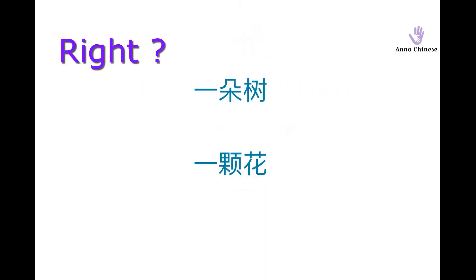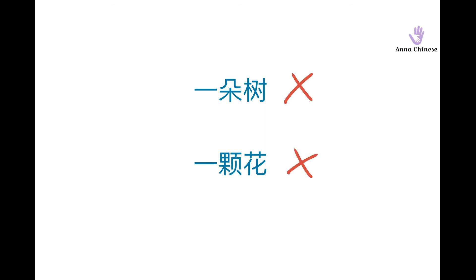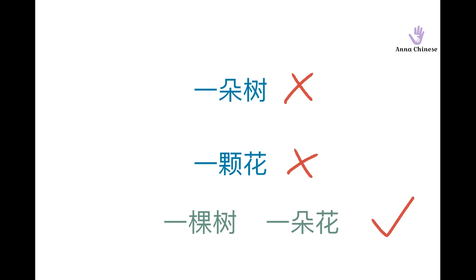Are those phrases right? They are wrong. We can only use 朵 to describe 花, flower. So that should be 一朵花, a flower. 棵 should be used to describe trees, so it should be 一棵树. We cannot say 一棵树, 一朵花, or 一朵树 — they are absolutely wrong. We can only say 一棵树, 一朵花.